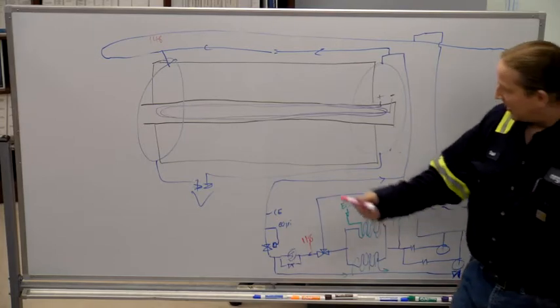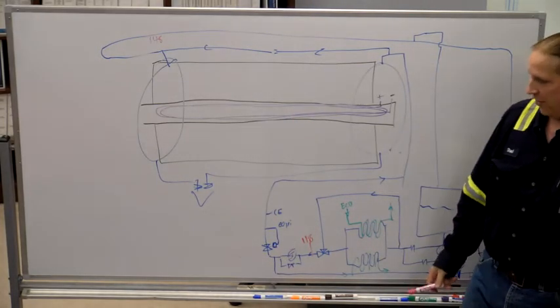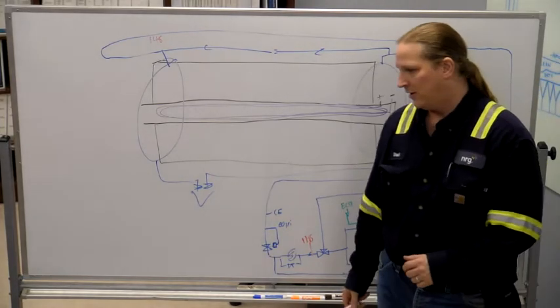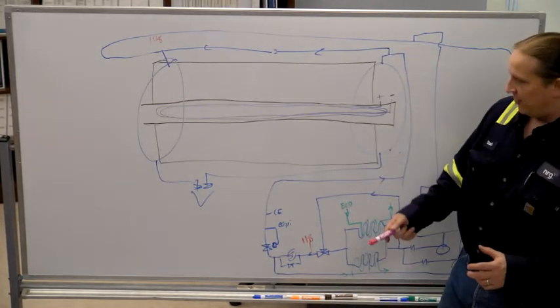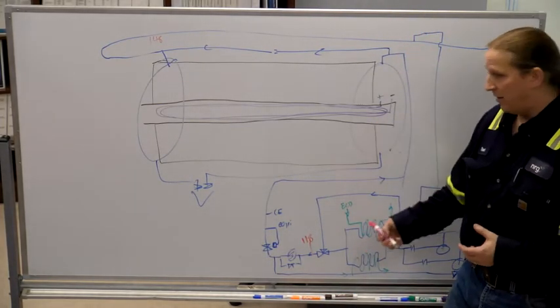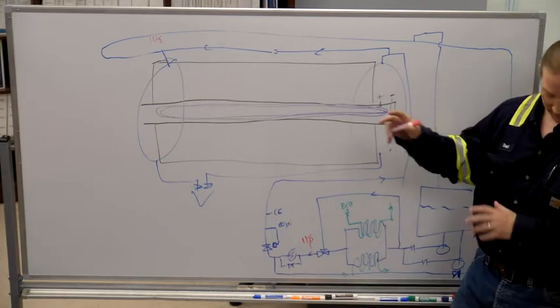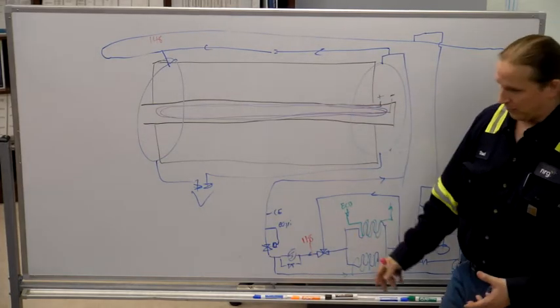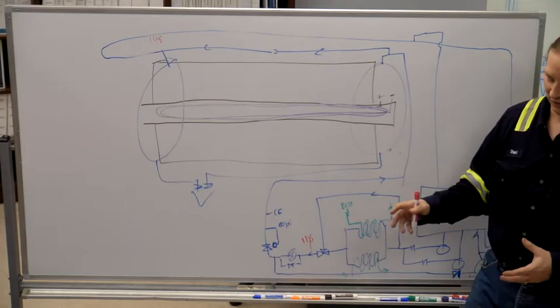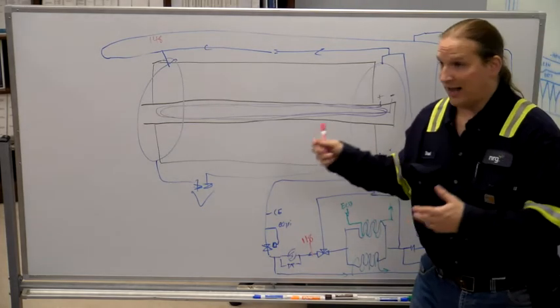So by using hydrogen inside here instead of air, then we can have less surface area, so you can have a smaller rotor, and we're talking 10 times smaller. So it's lighter, so it's more efficient.